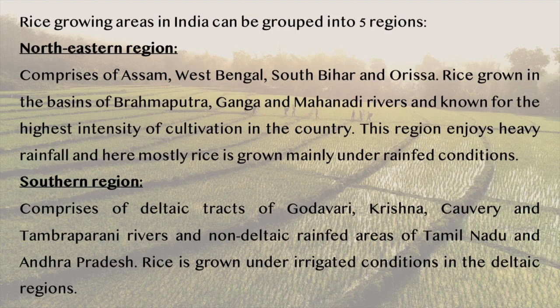Rice growing areas in India can be grouped into five regions. The northeastern region comprises Assam, West Bengal, South Bihar and Orissa. Rice is grown in the basins of Brahmaputra, Ganga and Mahanadi rivers. It is known for the highest intensity of cultivation in the country. This region enjoys heavy rainfall and mostly rice is grown under rain-fed conditions.